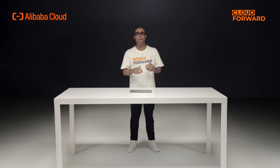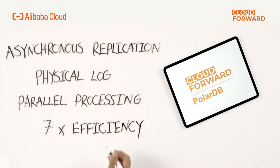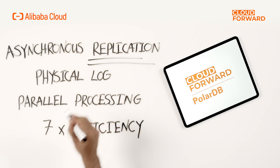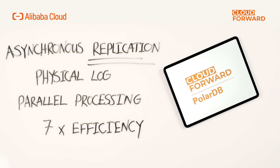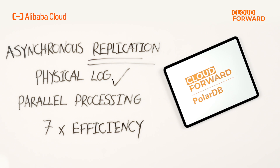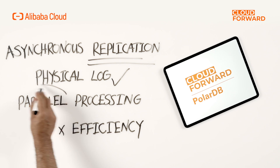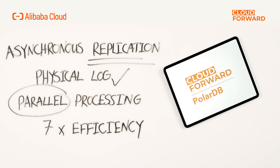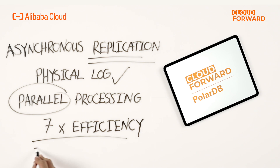Meanwhile, PolarDB GDN uses the asynchronous replication mechanism, physical logs, and parallel processing to replicate data across regions. The use of the GDN increases replication efficiency by 7 times.